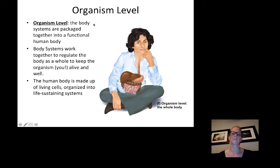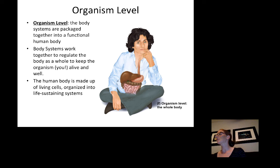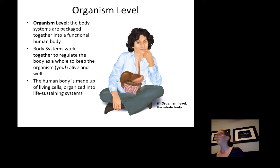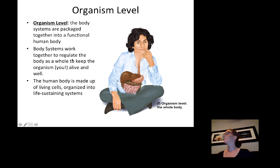Putting all body systems together gives us the whole organism, where body systems work together to regulate the body as a whole. Even though we'll focus on individual organ systems in this class, organ systems really function together for the complete organism — for example, the kidneys work together with the cardiovascular system and the endocrine system, all to maintain homeostasis.